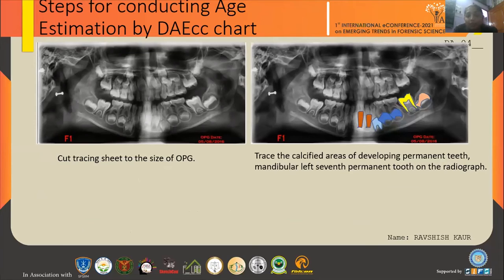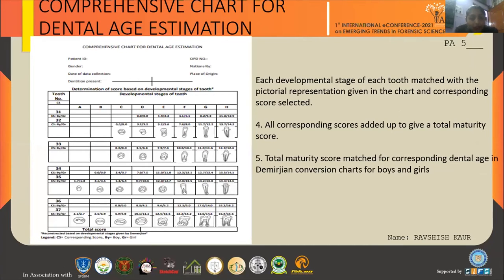Before presenting results and observations, I will explain how I examined the data. I have taken certain steps for conducting age estimation by the Demirjian chart. First, I took the panoramic radiograph, cutting the tracing sheet to the size of the OPG. I traced the calcified area of developing permanent teeth on the seventh mandibular tooth on the radiograph. After tracing, each developmental stage of the tooth was matched with the pictorial representation given in the chart. This is the averaged Demirjian chart, and the corresponding scores for boys and girls were correlated, with all scores added up to the total maturity score, which was further matched with the corresponding Demirjian conversion chart for boys and females.